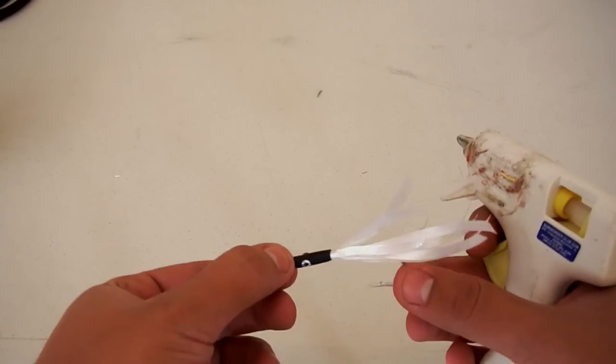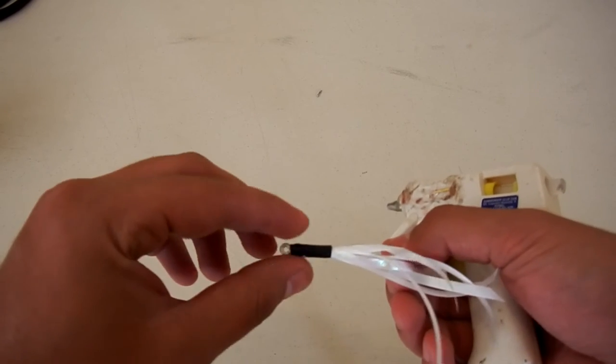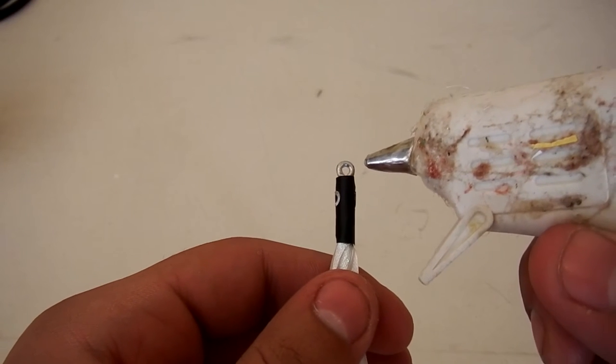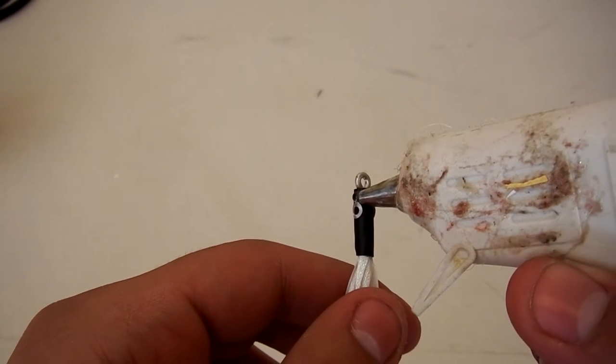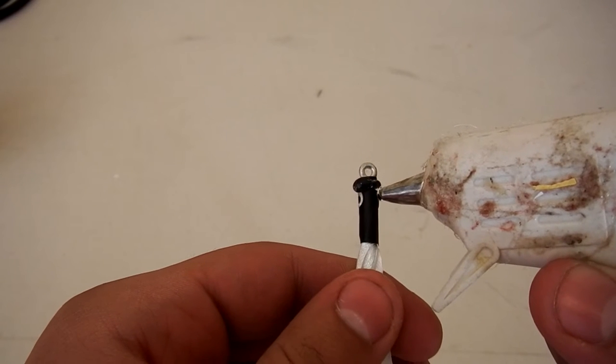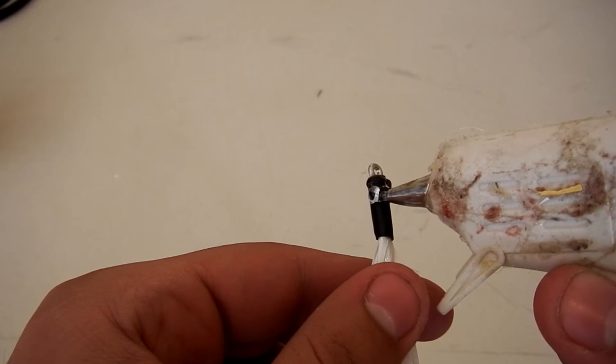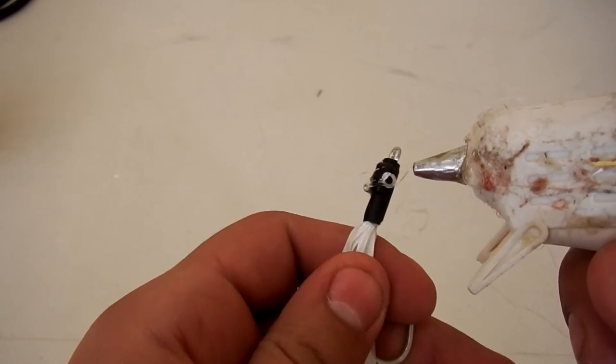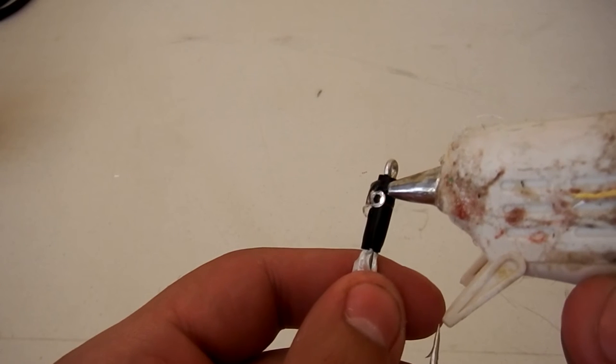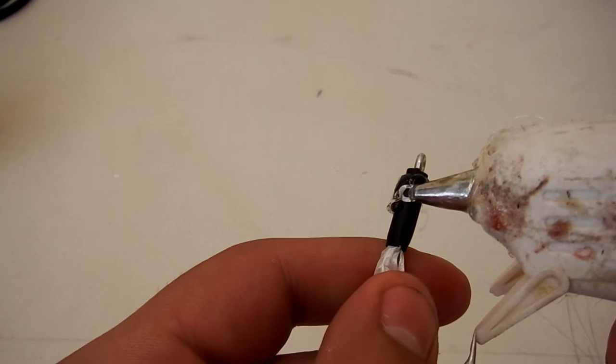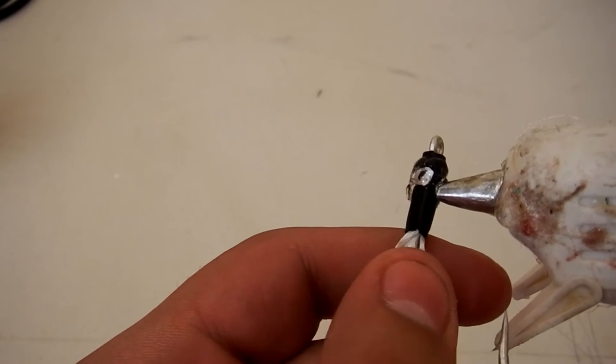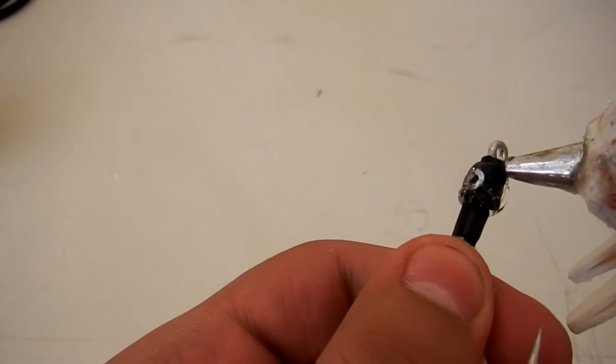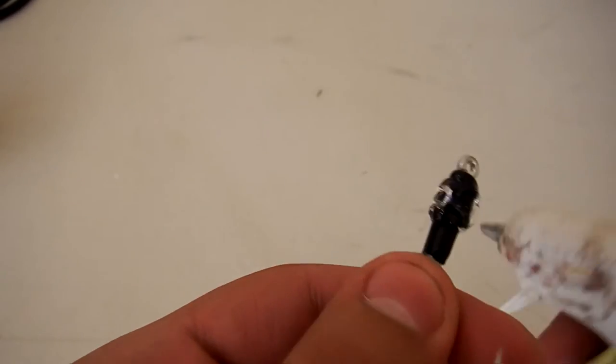Alright, now that we have the hot glue gun ready to roll, we're going to apply it to the top part from one side to the next, and then quickly go to the bottom side and apply it there.